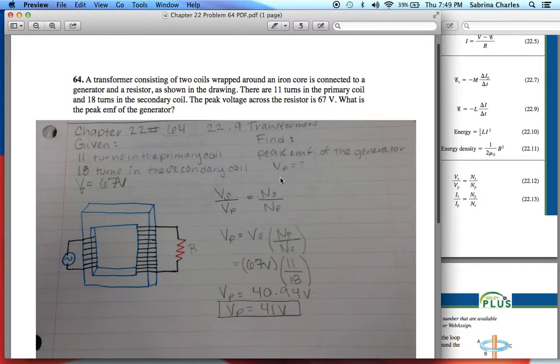Here's our formula and we manipulate it, which gives us VP equals VS times NP over NS.